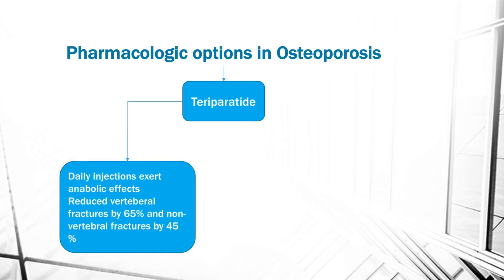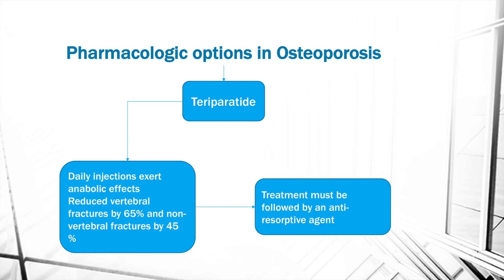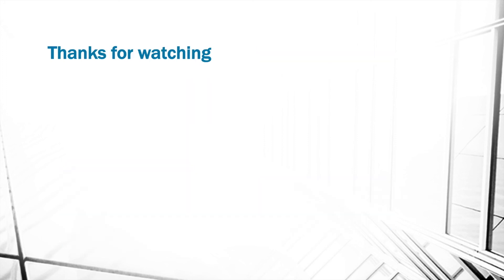Teriparatide is administered by daily injection, exerts anabolic effects, and reduces vertebral fractures by 65% and non-vertebral fractures by 45%. Treatment with teriparatide must be followed by an anti-resorptive agent such as a bisphosphonate. That's it for our video on osteoporosis — we will see you in the next presentation.